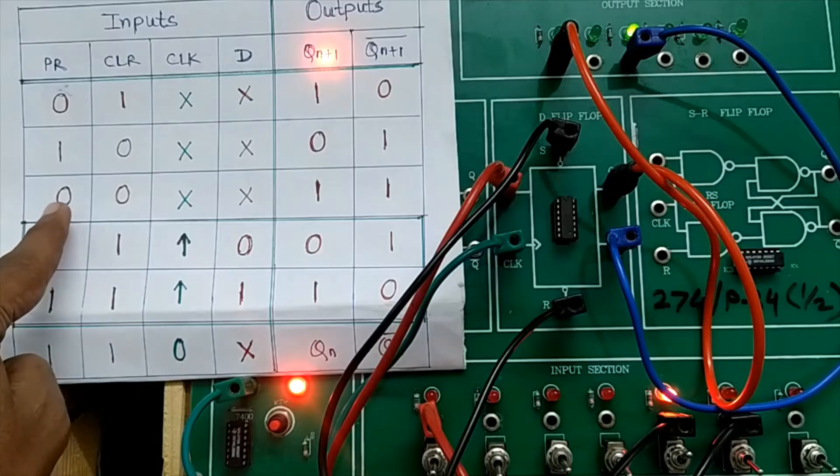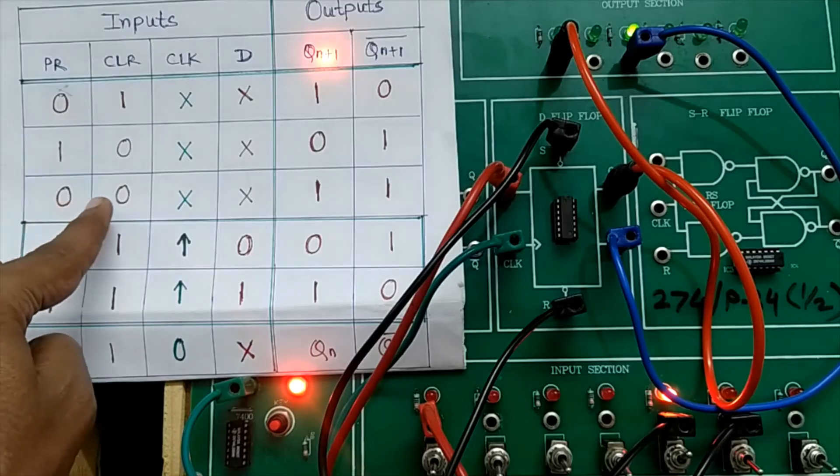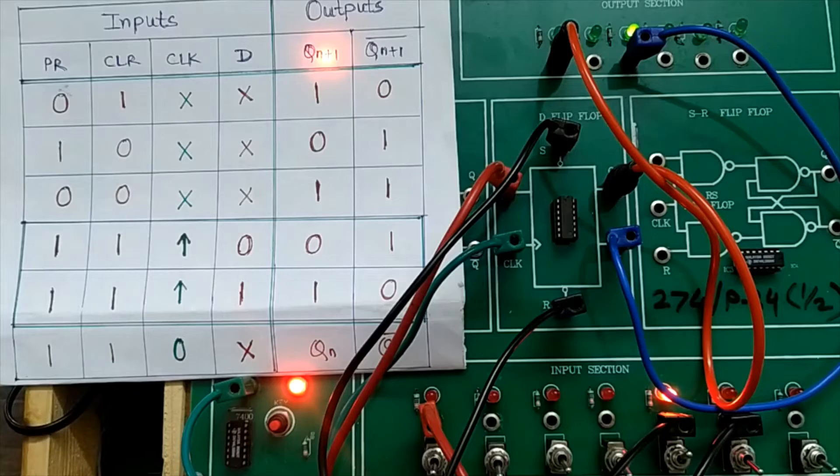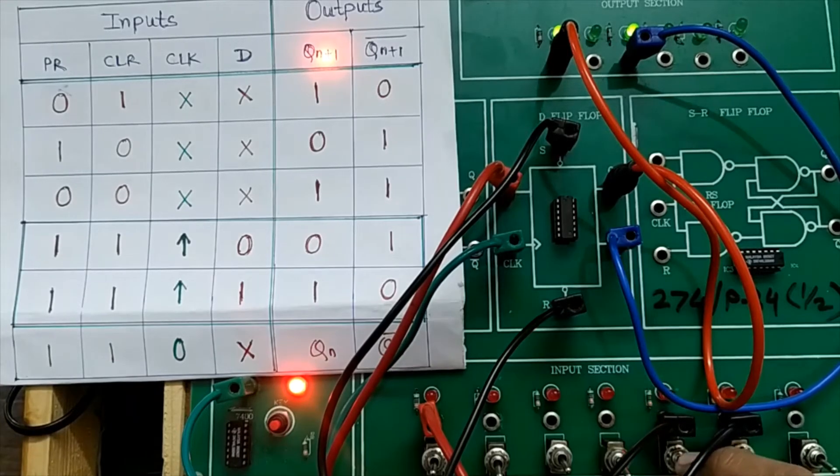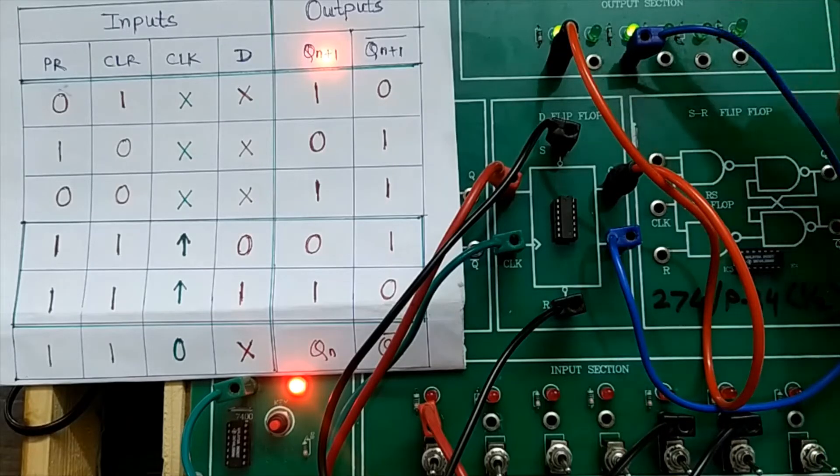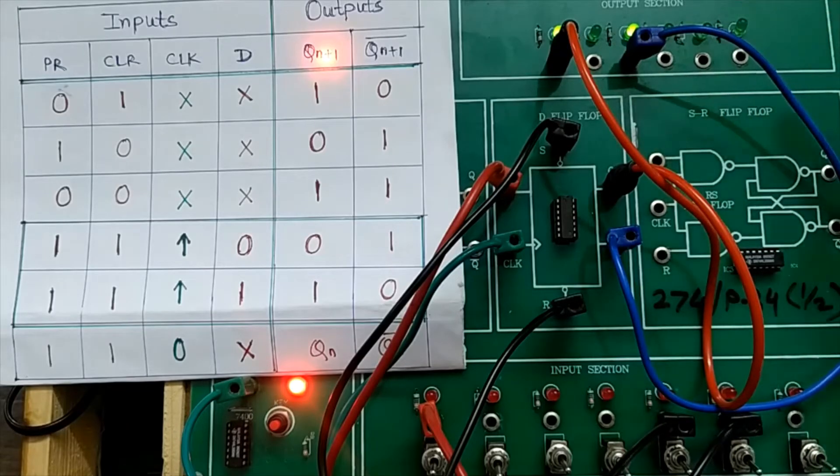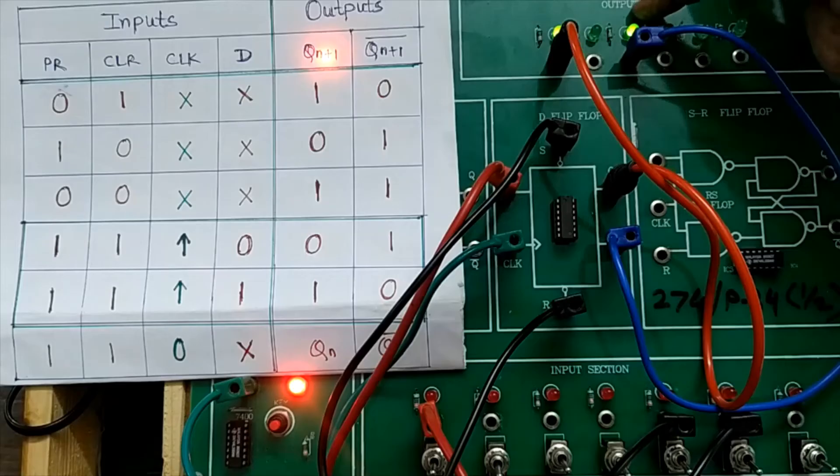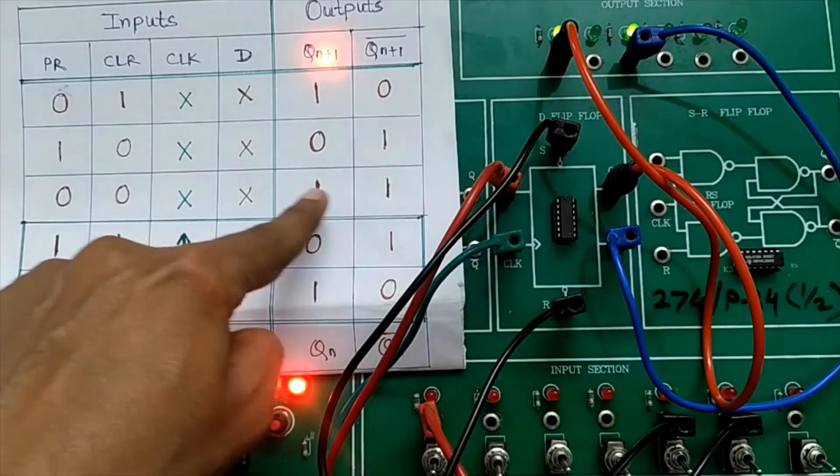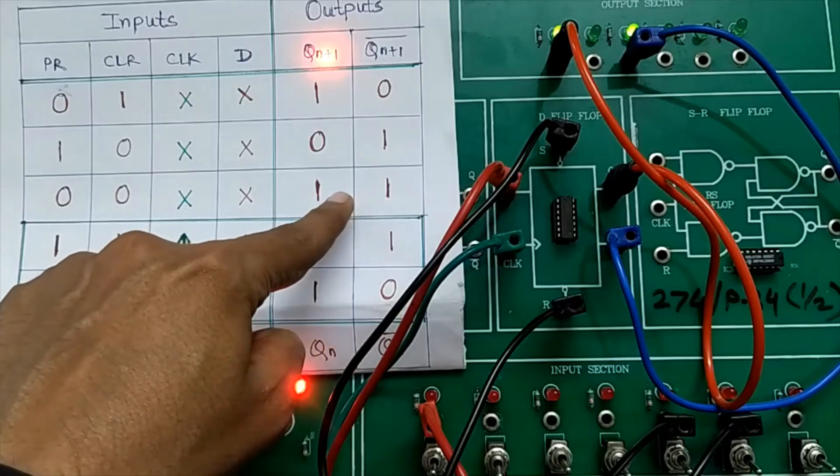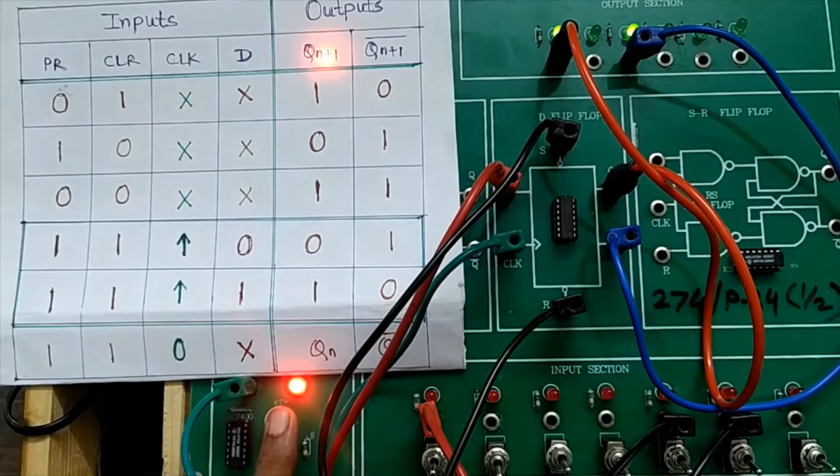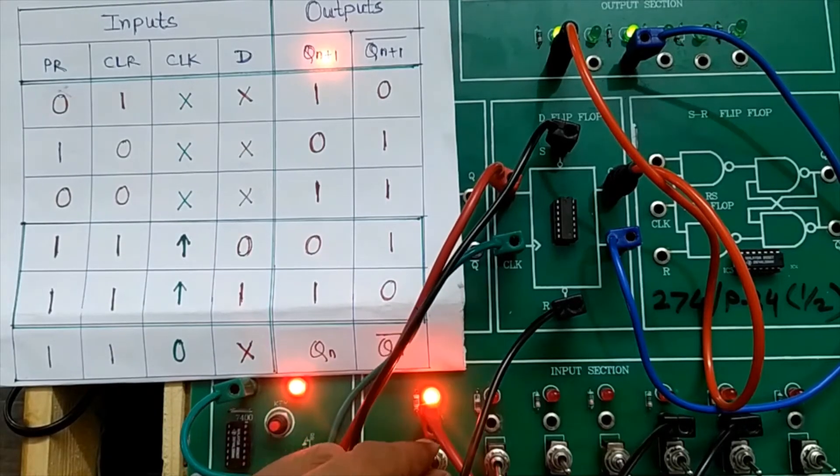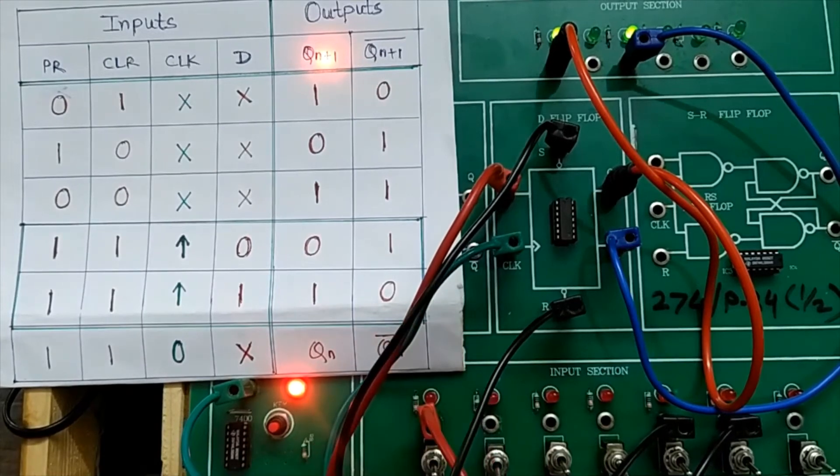Let us move to the third possible combination when preset as well as clear both are made zero. Preset is zero, clear is already zero. Observe the output. The inverting as well as non-inverting output both are one, which is shown here. Generally we don't use this condition. Whatever is the status of clock or applied input, output is not going to change.